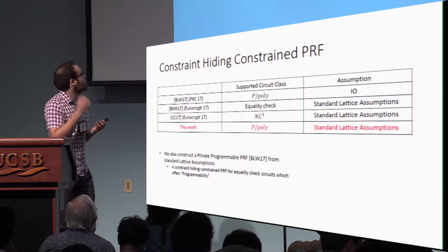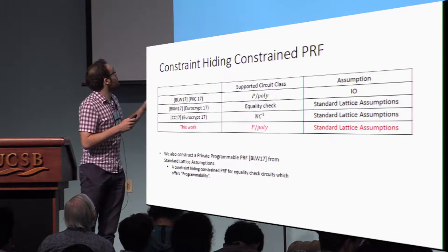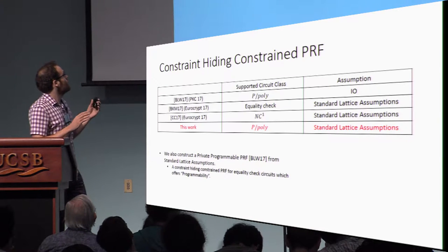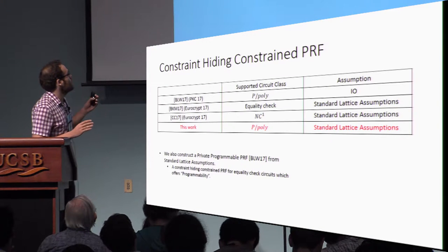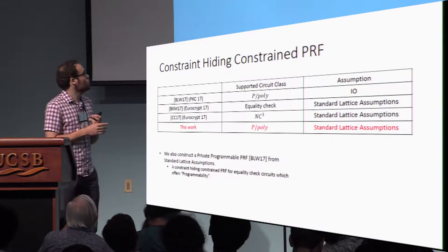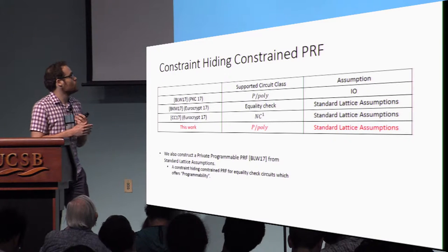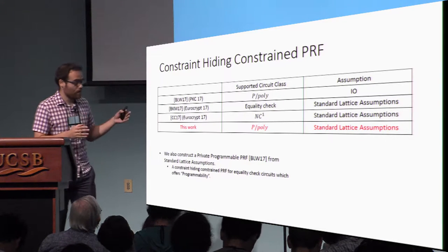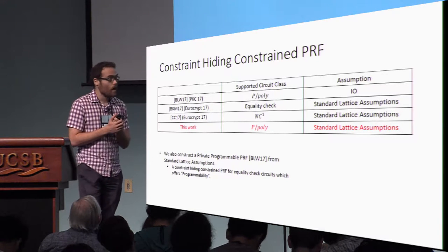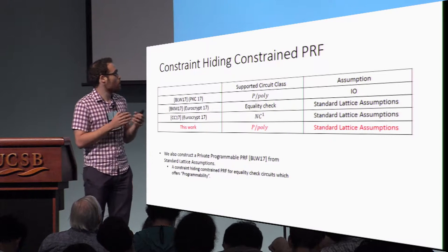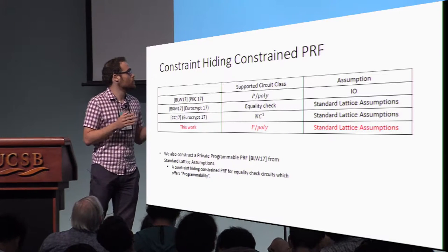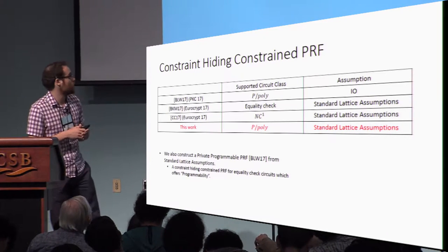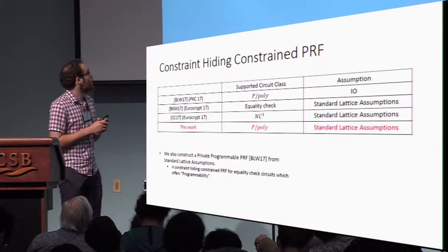In PKC 2017, Boneh, Lewi, and Wu defined the notion of constraint-hiding constrained PRFs and gave a construction based on indistinguishability obfuscation.